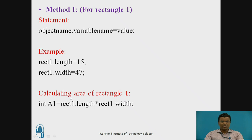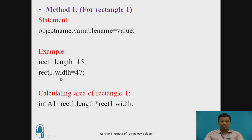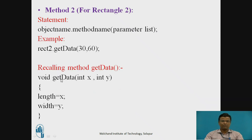Here we are calculating the area for rectangle one, where int A1 = rect1.length * rect1.width, using the variables rect1.length and rect1.width. This is the first method.